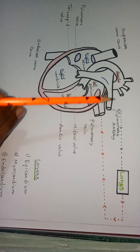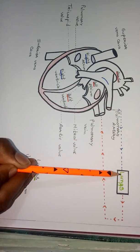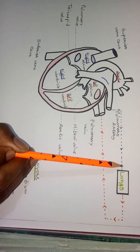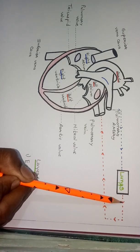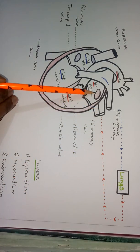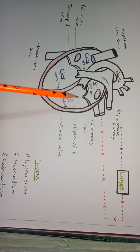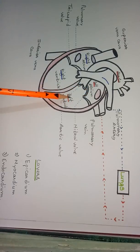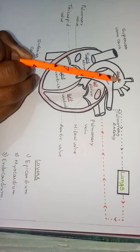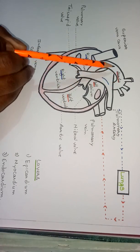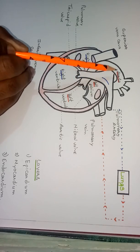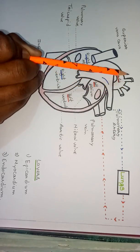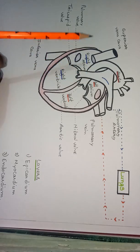From the right ventricle, this blood goes to the pulmonary artery, which is connected with the lungs where deoxygenated blood gets converted into oxygenated blood. That oxygenated blood comes back to the heart with the help of the pulmonary vein, then comes to the left ventricle. From the left ventricle, this blood goes to the aorta. The aorta is the largest artery which supplies oxygenated blood to each and every part of the human body, and is further connected into small arteries which help to supply the blood.